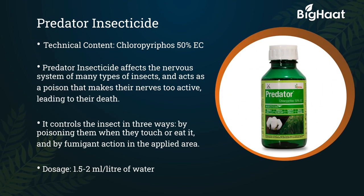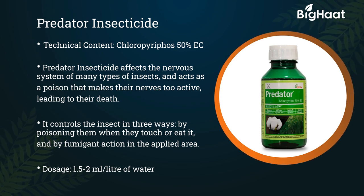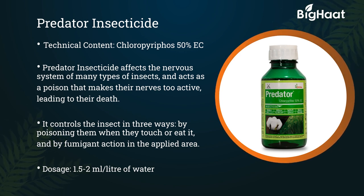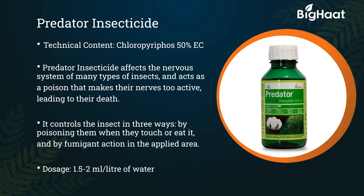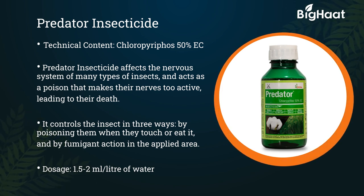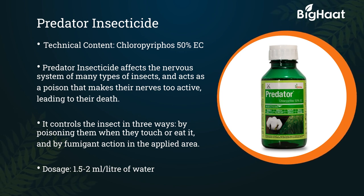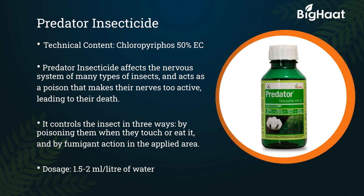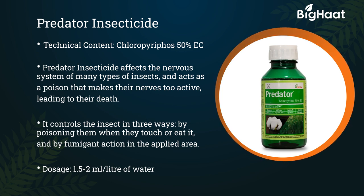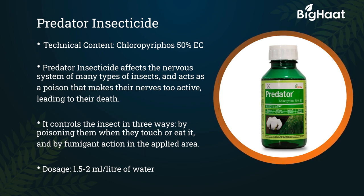Predator insecticide — its technical content is chlorpyrifos 50% EC. Predator insecticide affects the nervous system of many types of insects, acting as a poison that makes the nerves too active, leading to their death. It controls insects in three ways: by poisoning them when they touch or eat it, and by fumigation action in the applied area. Its dosage is 1.5 to 2 ml per liter of water.